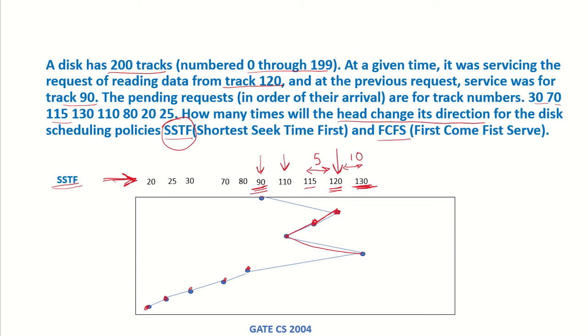So how many times has the head changed its direction? It was earlier moving in this direction from 90 to 120, so it was moving in this direction, but now it has changed direction over here, moving towards the inward. Then it has changed direction over here moving outwards again, and then changed direction here. So three times the direction has changed in SSTF.